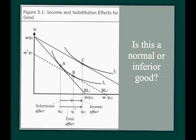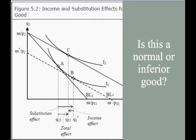Here is another diagram to analyze the substitution effect, income effect, and total effect to determine if a good is normal or inferior. When the substitution effect moves in the same direction as the income effect, you have a normal good. When they move in opposite directions, you have an inferior good. Note that the good under consideration is the one along the horizontal axis—the good along the vertical axis has a different effect that can be analyzed separately.